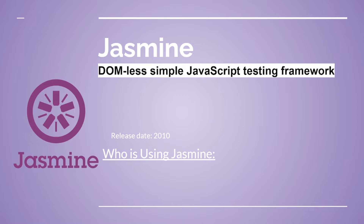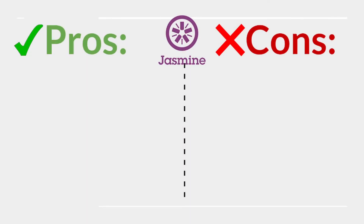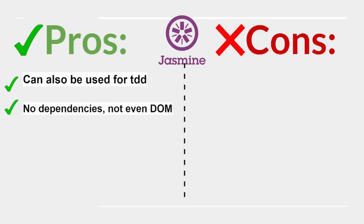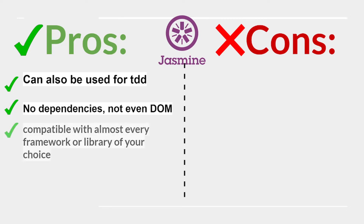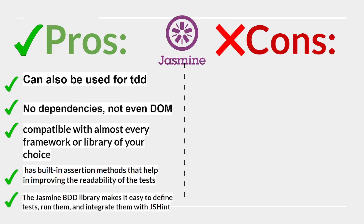Jasmine is a simple JavaScript testing framework, released in 2010. Used by GitLab and Walmart. Pros: can be used for TDD, no dependencies, compatible with almost every framework or library of your choice, and has built-in assertion methods that help improve the readability of tests.